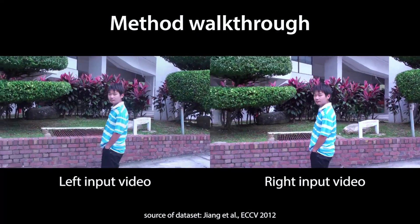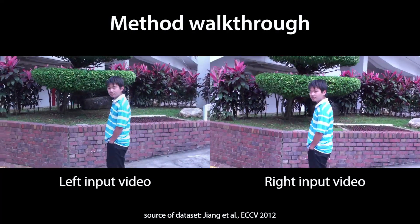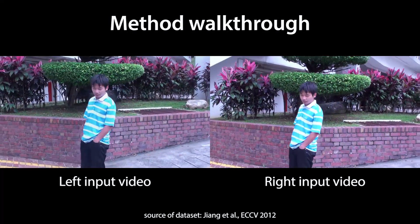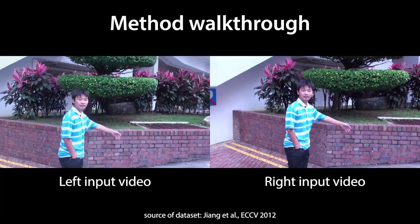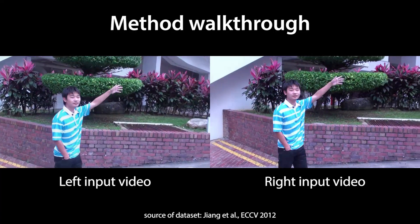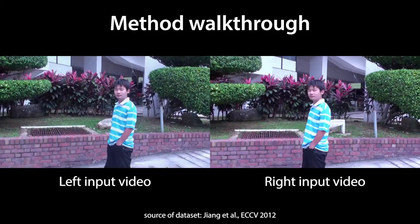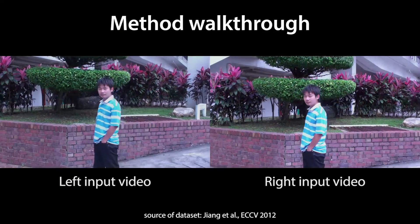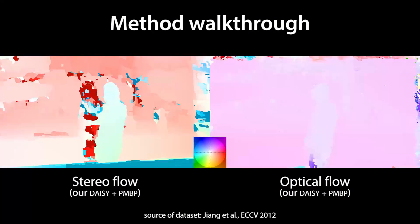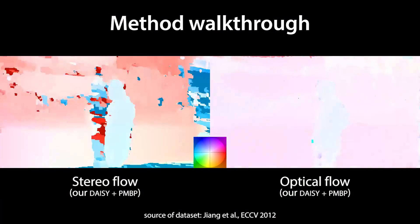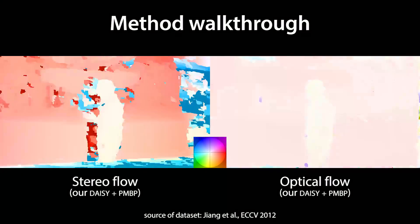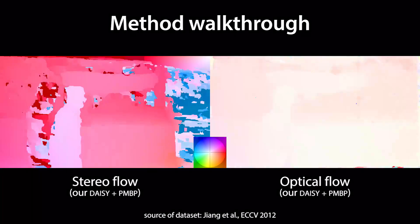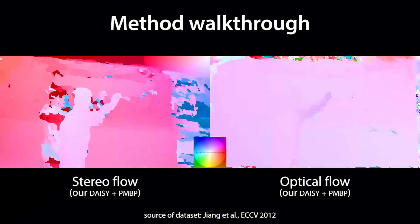Here is an overview of our method. We start from two handheld videos and calibrate them extrinsically. Note that the videos have consistent appearance in this dataset, but we also support different appearance as we will show later. We then compute dense stereo flows between the cameras and optical flows over time using a novel wide baseline matching technique based on DAISY and patch match belief propagation.